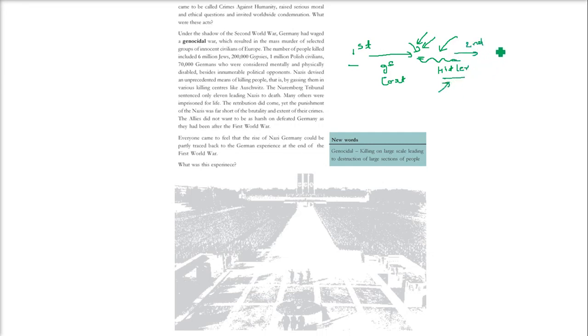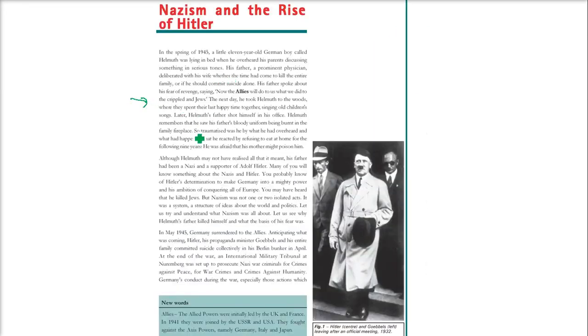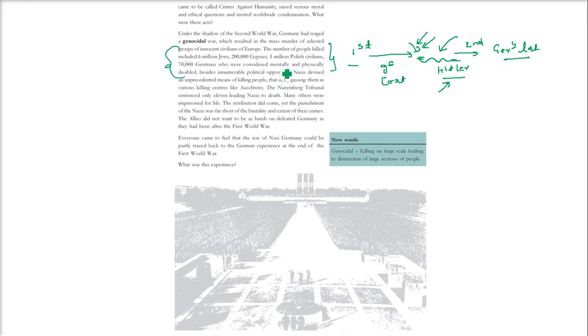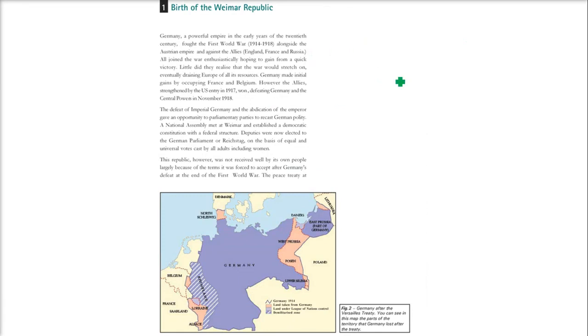Germany again lost the Second World War. When the war ended, it became known that what had happened in Germany was truly unprecedented — complete genocide. But we should look at Hitler more carefully: what was the background? What actually happened? Can we say he was actually the way people present him? We will find out in a few minutes.